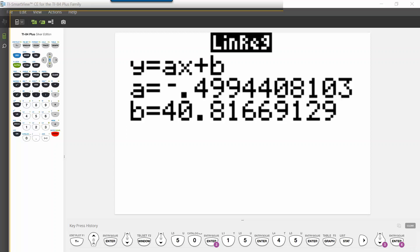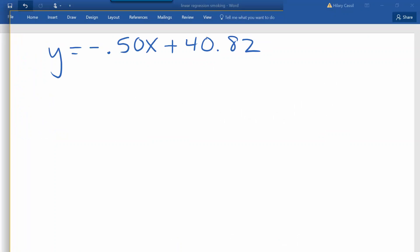And let's go ahead and round our values to two decimal places. Now we have a second equation to model this situation that included all of the points that we had instead of just the two that we chose the first time around.